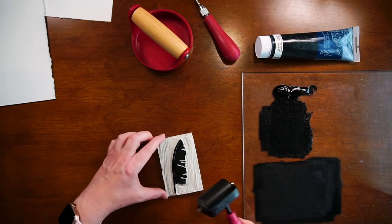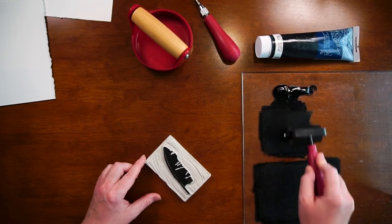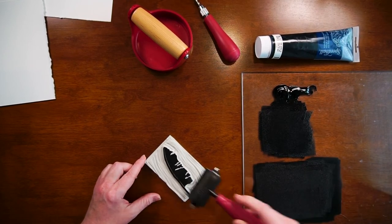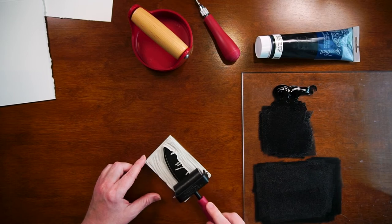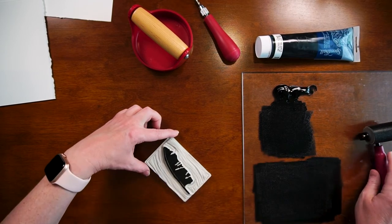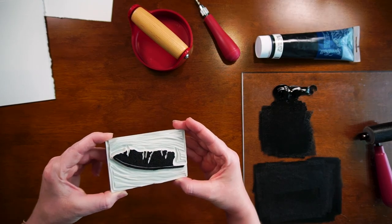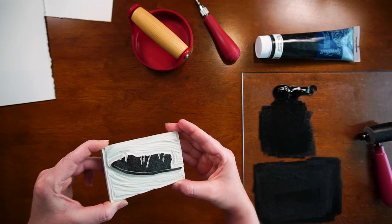Now just roll it back on. Now because this is the second inking it's a little trickier to see where you've inked. So I go until I think I have it and then I lift it up and I kind of look at it in the light and see do I have ink everywhere and I think I do.